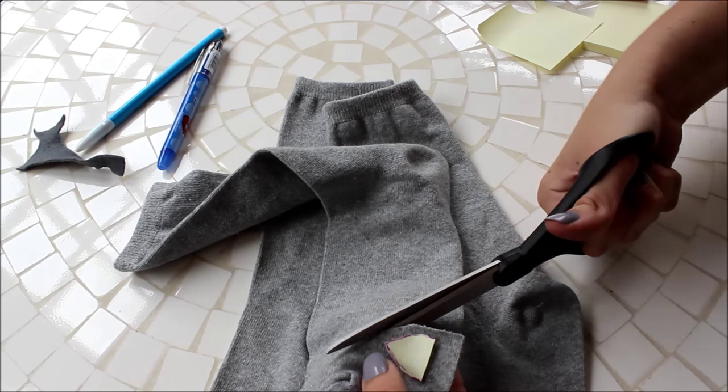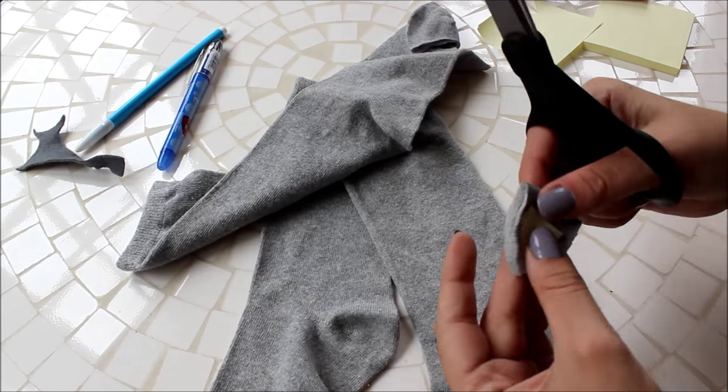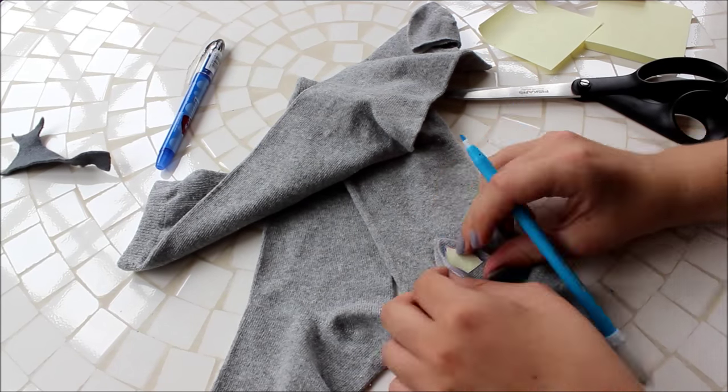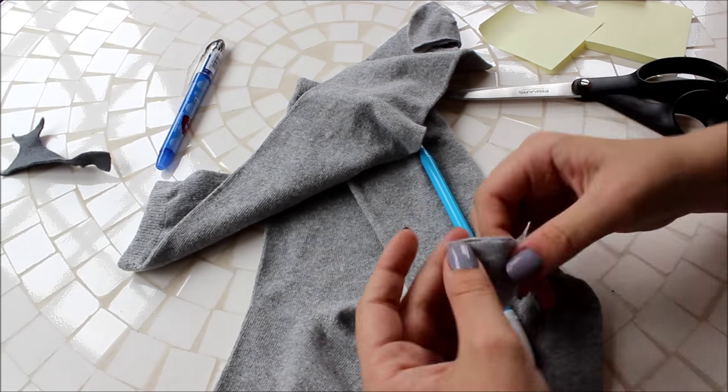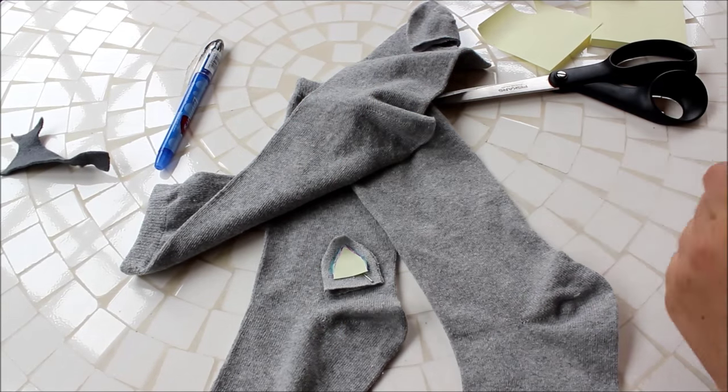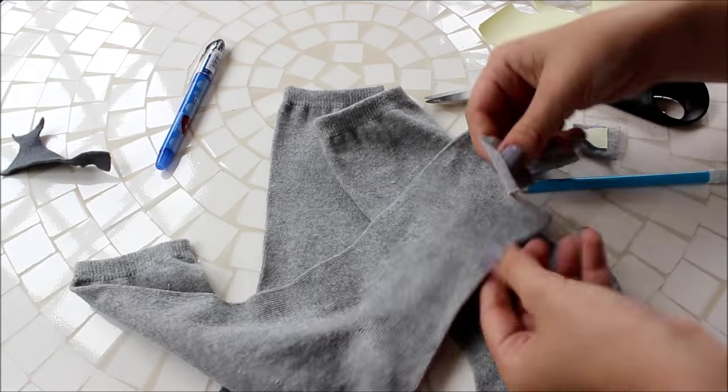Next, place this ear template on one of your socks and cut it out, leaving a small seam allowance. This will leave you with two triangles, which will become one ear. Repeat this three more times so that you have eight triangular pieces in total.